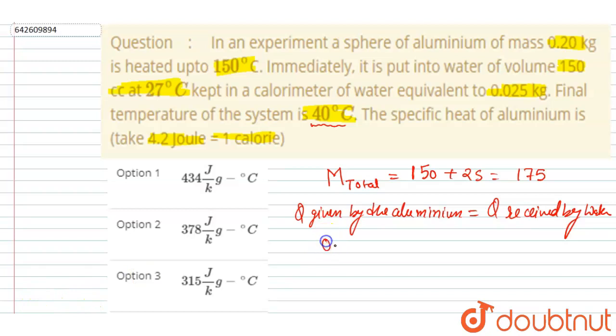0.2 into specific heat of aluminum into change in temperature, which is 150 minus 40. So I will write this, and this will be equals to the heat received by the water plus calorimeter.